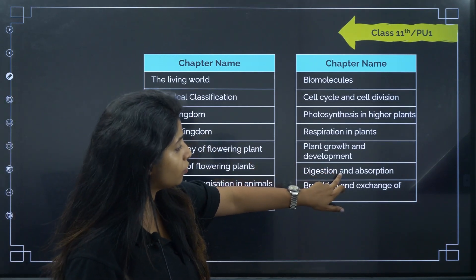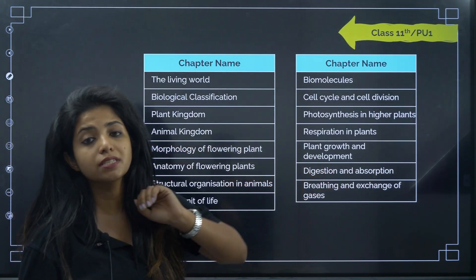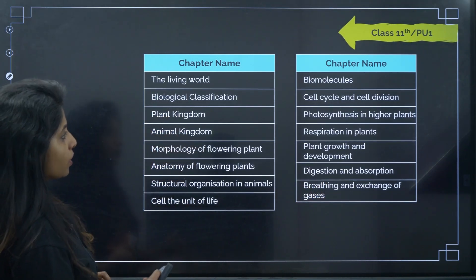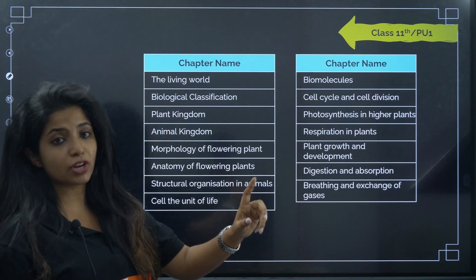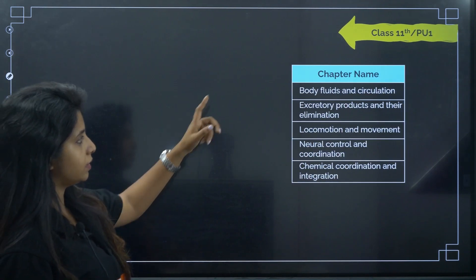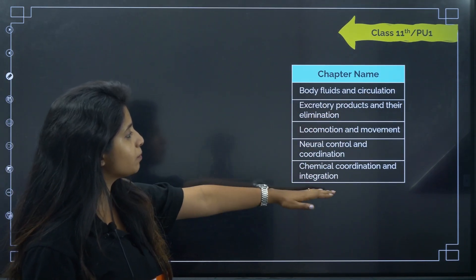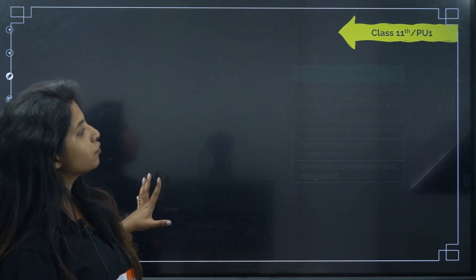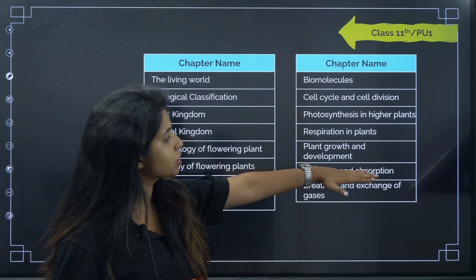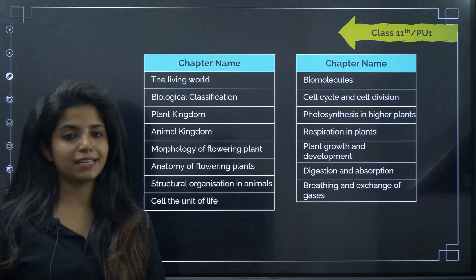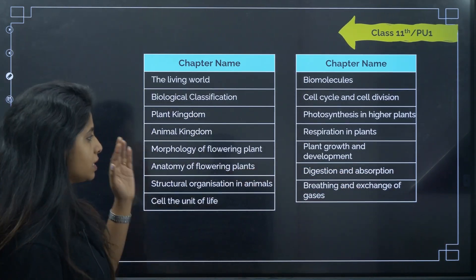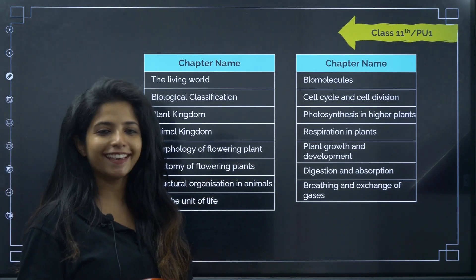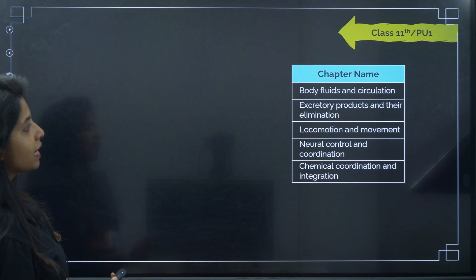Digestion and absorption is a chapter that is deleted from 11th, so it won't be there. There is one more set of chapters: from body fluids and circulation up to chemical coordination and integration. So altogether, excluding digestion and absorption, 11th grade comes out to 19 chapters. These chapters will definitely entice you very much.